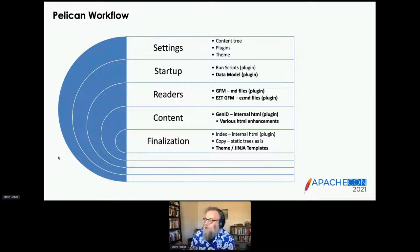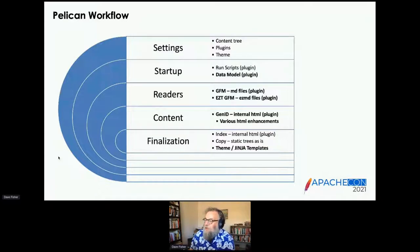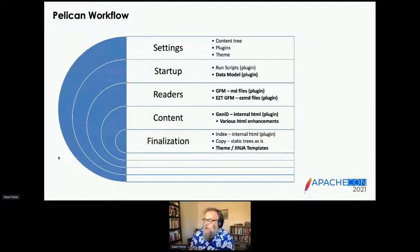Pelican collects the files. It knows what a static file is, and for non-static files it has readers. We have two readers. One is for GitHub-flavored markup — those are typically MD files. Then we have EZT-enhanced GFM files, which we call EZMD files. There's a separate reader class for that, which is actually a subclass of the GFM reader.